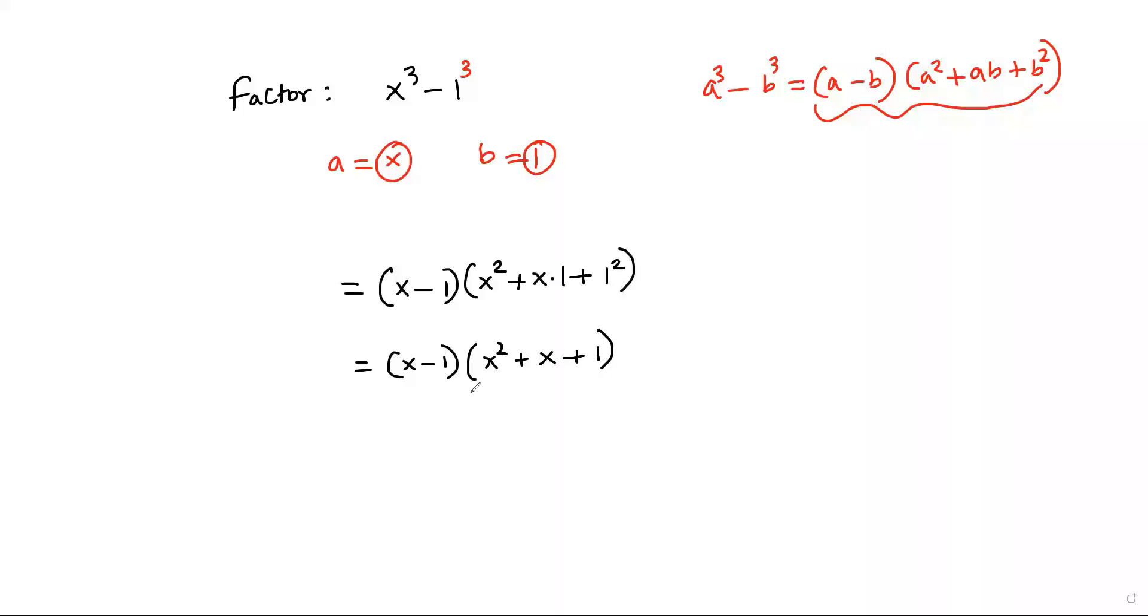So the factored form of the given expression x³ - 1 is (x - 1)(x² + x + 1). I think everyone can understand this. Thank you.